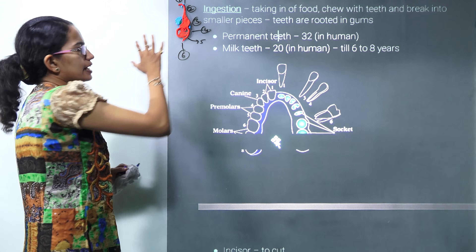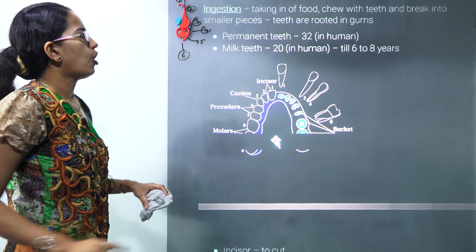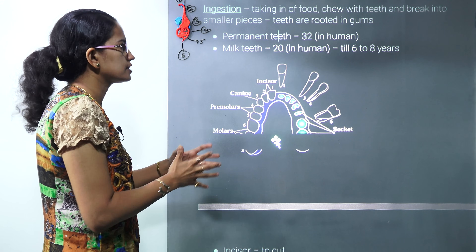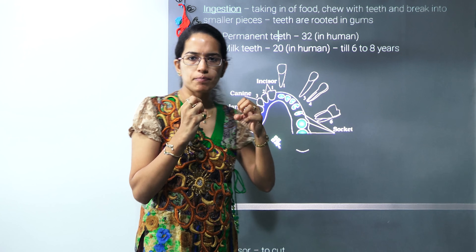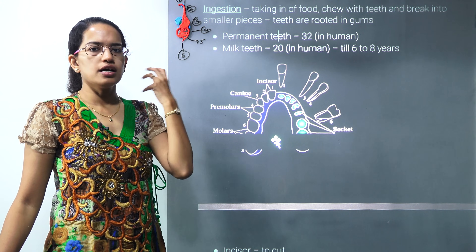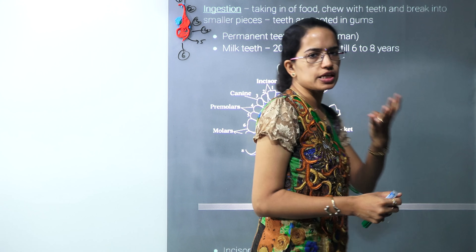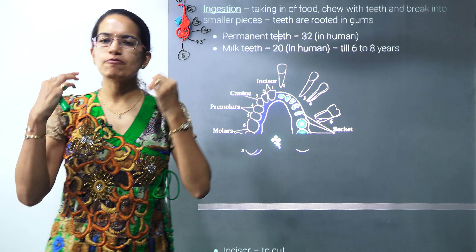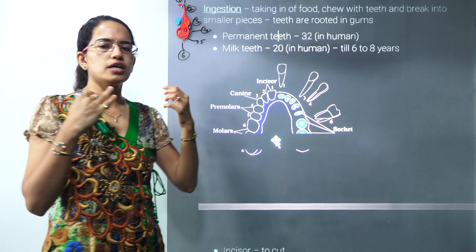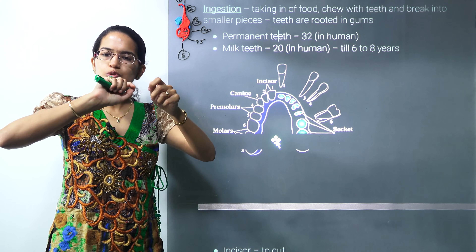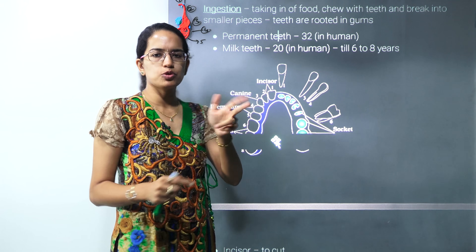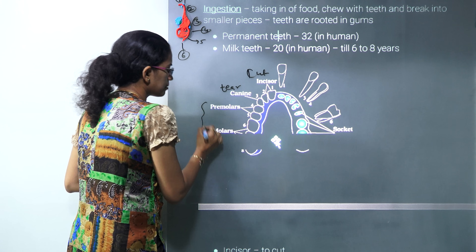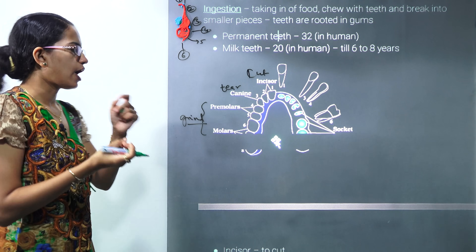Let's first talk about the mouth — the place where ingestion of food takes place. Food is chewed and ground into smaller parts by the teeth. There are four types of teeth: incisors at the front that cut the food, canines surrounding them that tear the food, and premolars and molars that grind the food further into smaller pieces.